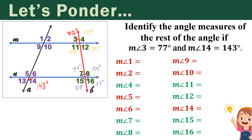Same manner with angle 16 — it is considered a vertical angle of angle 7, so angle 16 is 77 degrees as well. Moving on to transversal line A: it is given that angle 14 is 143 degrees. Angle 14 and angle 15 are vertical angles — wait, angle 5 is 143 degrees as well. For angle 6, it is supplementary with angle 5, so angle 6 would be 37 degrees. That is 180 minus 143 degrees. Let's check: 10 minus 3 is 7, 7 minus 4 gives us 3, so that's 37 degrees.